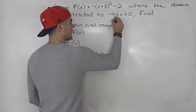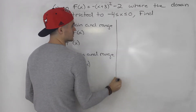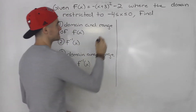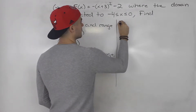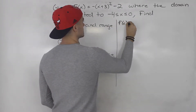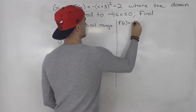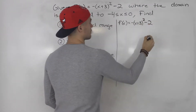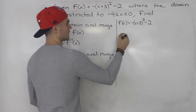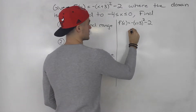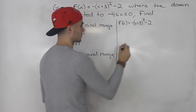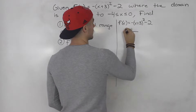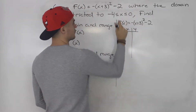Whenever you're given a function with a restricted domain, what I recommend is always making a table of values with that restricted domain. So here's the function that we're given, and we're going to make a table of values from negative 4 to 0.